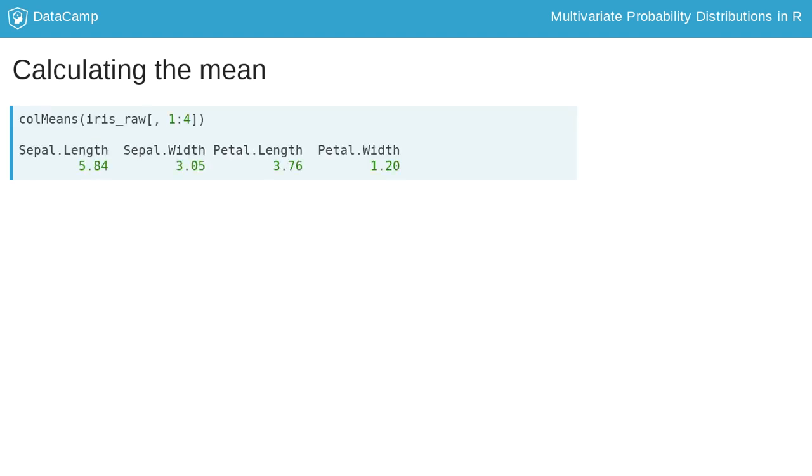To calculate the mean of all four measurements disregarding the species, we use colMeans function with the first four columns of the iris_raw dataset. Since these observations come from different species, we should also calculate the mean vector for each species.